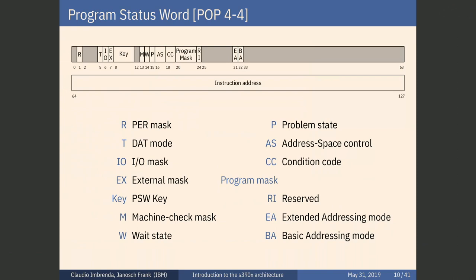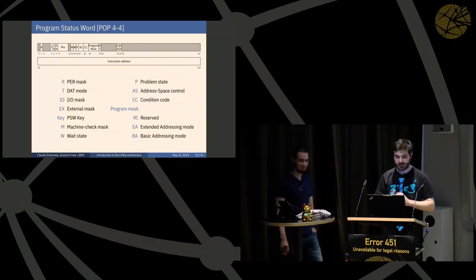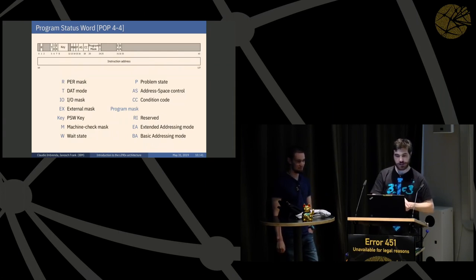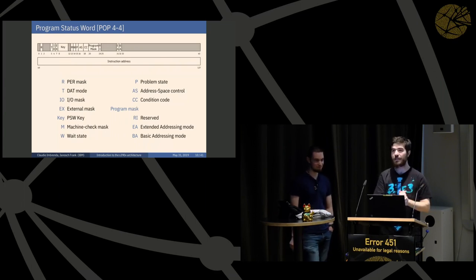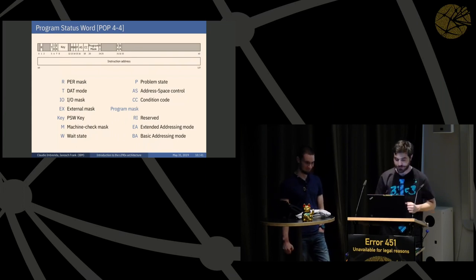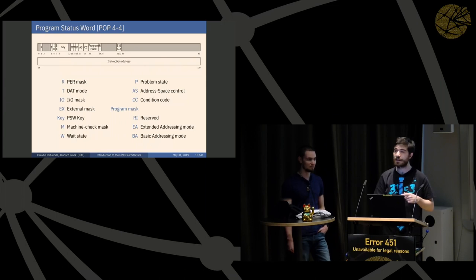The Program Status Word is a combination of what you'd find in other architectures as the flag register and instruction pointer — it's actually not even a word, it's longer. It contains the instruction address and many important bits: the T bits to switch paging on and off, the I/O mask, the external mask, the PSW key (covered later), the machine check mask (which you can set to 0 — your CPU might literally be burning but you don't want to be disturbed), and the wait state. When the wait state is on, the CPU stops running and waits for interrupts — other architectures have an instruction for this; we don't. We have enough instructions already.